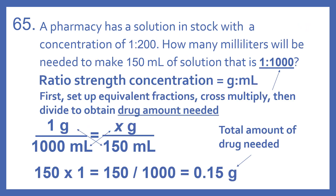The ratio strength concentration formula is grams to milliliters. We need a solution that's 1 gram to 1000 milliliters as our concentration. First we're going to set up equivalent fractions, cross multiply, then divide to obtain the drug amount needed.